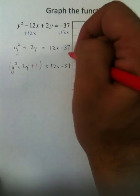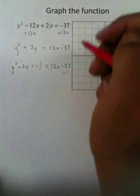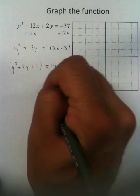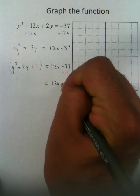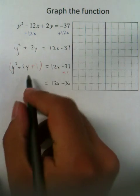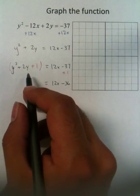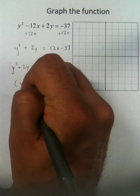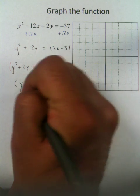Now, because we added 1 to this side, we have to add 1 to this side as well. And so now we have this quantity, 12X minus 36, but over here, since it's a perfect square trinomial, it factors down into Y plus 1 to the power of 2.